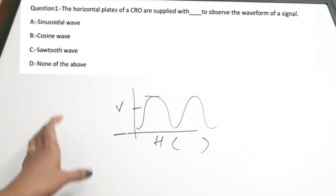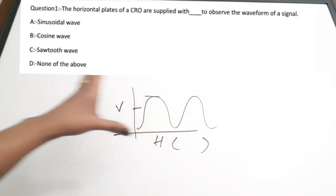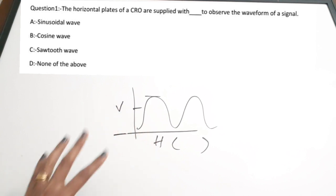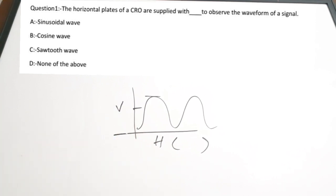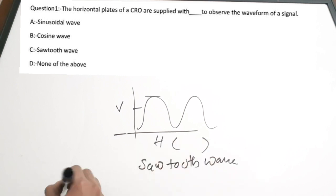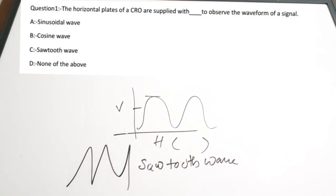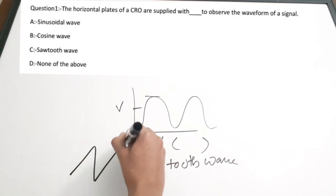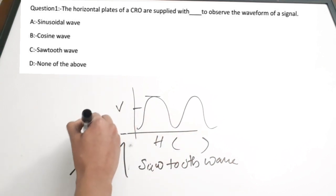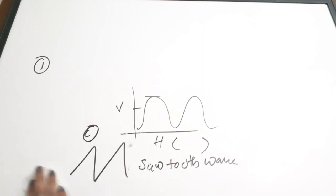Whatever signal is connected to the probe of the CRO, its amplitude value is taken to the vertical axis, while the horizontal axis corresponds to time generated internally. To generate this time internally, a sawtooth waveform is supplied. So the correct answer is option C — sawtooth wave.